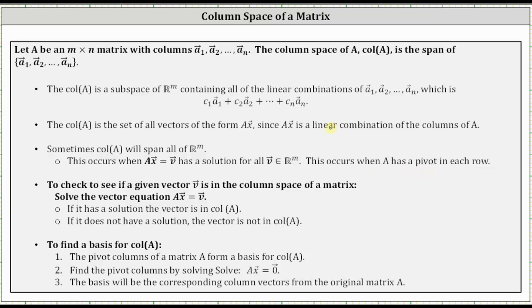There are two common types of questions when working with the column space of a matrix. Number one, we will want to check to see if a given vector v is in the column space of a matrix. To do this, we solve the equation A times vector x equals vector v. If there's at least one solution, then the vector v is in the column space. If there is no solution, the vector is not in the column space.